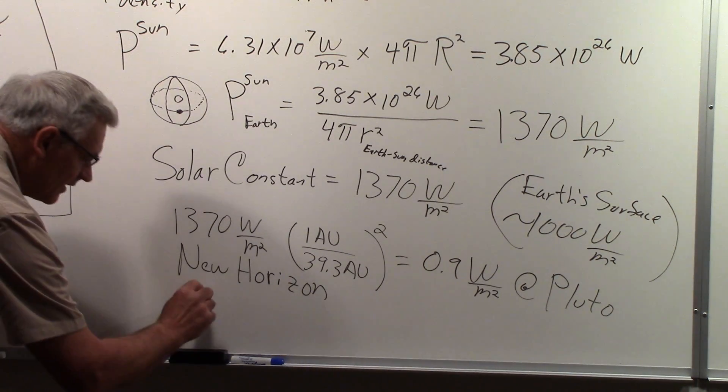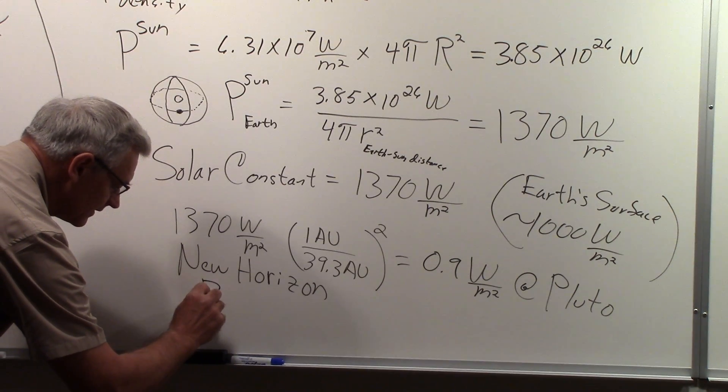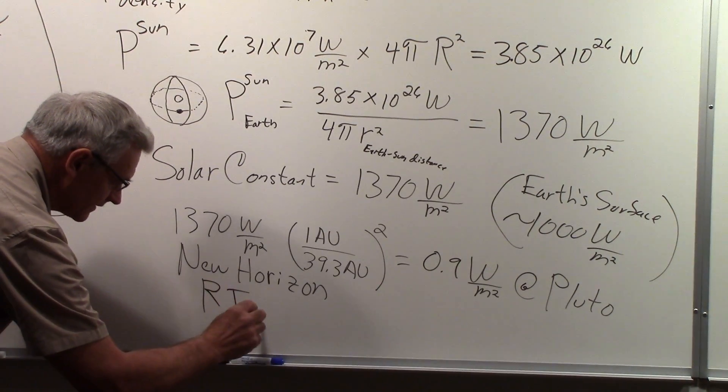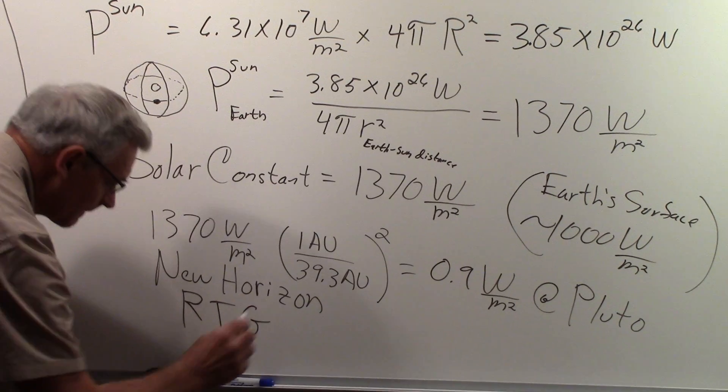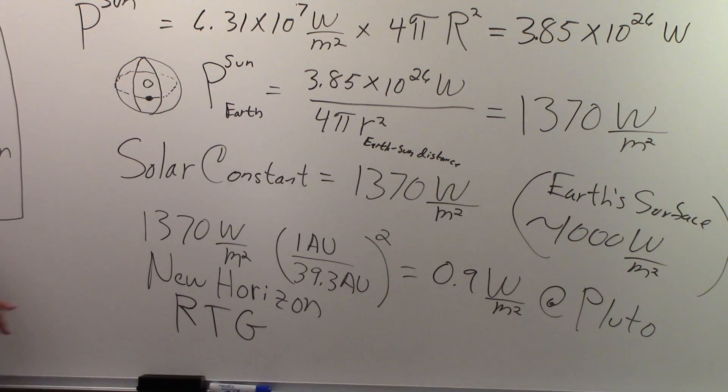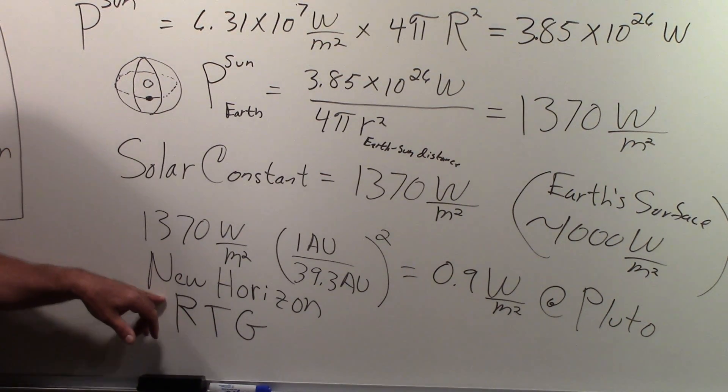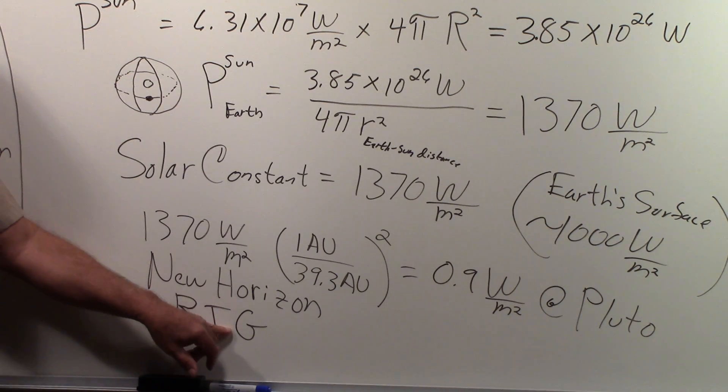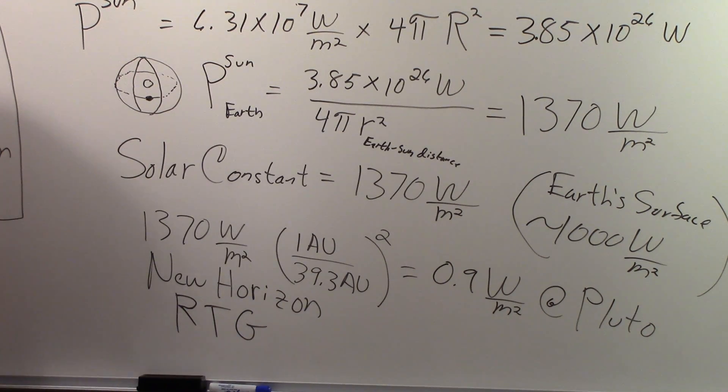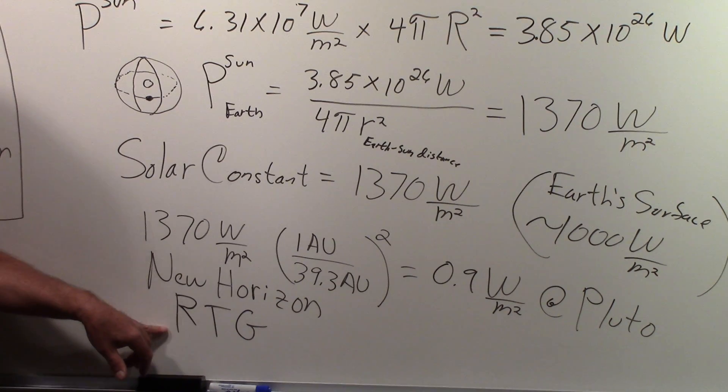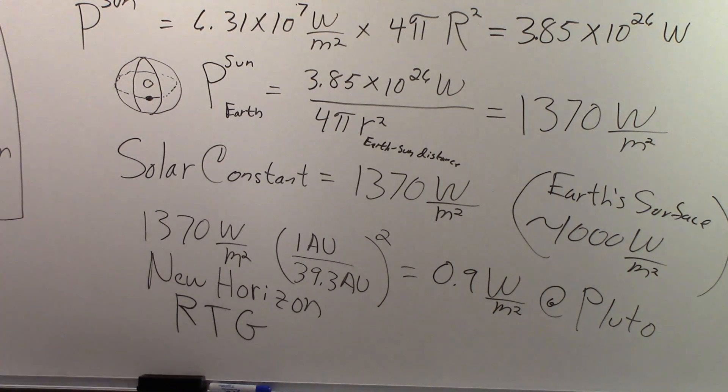So the New Horizons spacecraft has on board, instead of solar panels, it has what is called—NASA loves acronyms—RTG. And that stands for radioisotope thermoelectric generator. And the working substance, the radioisotope that's used is plutonium.